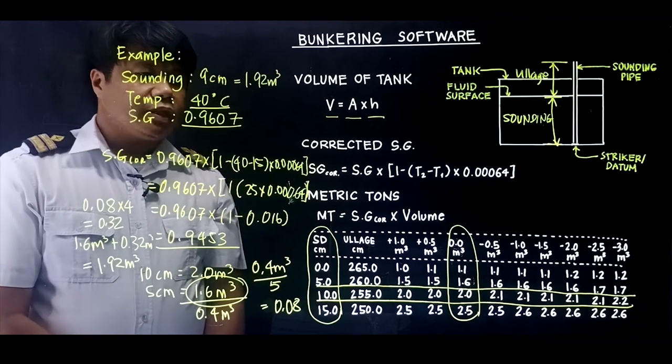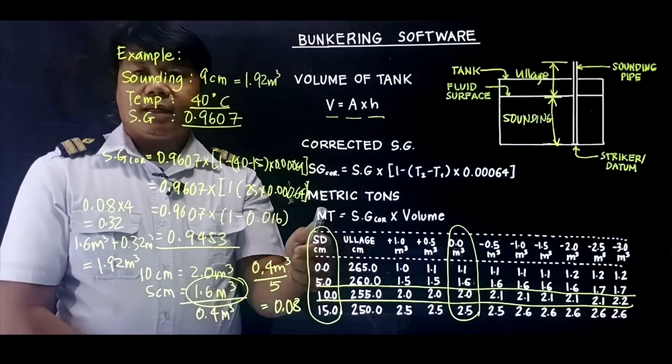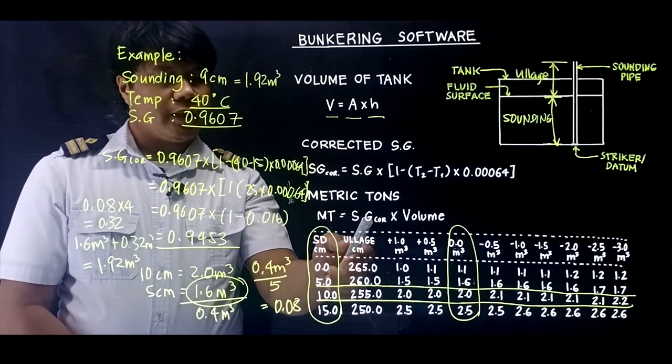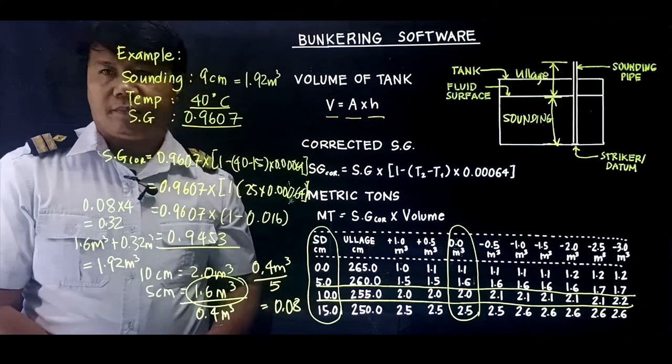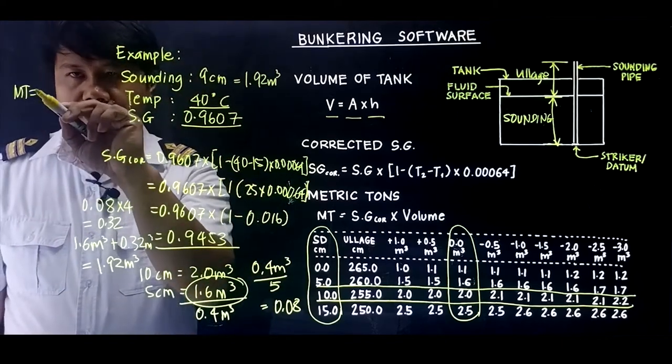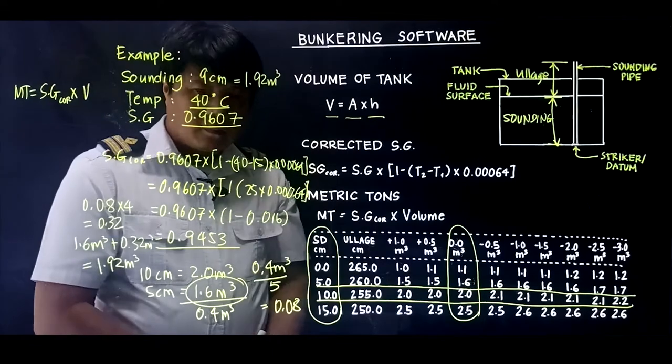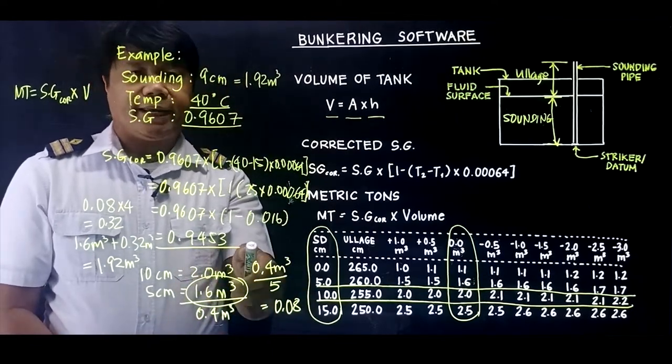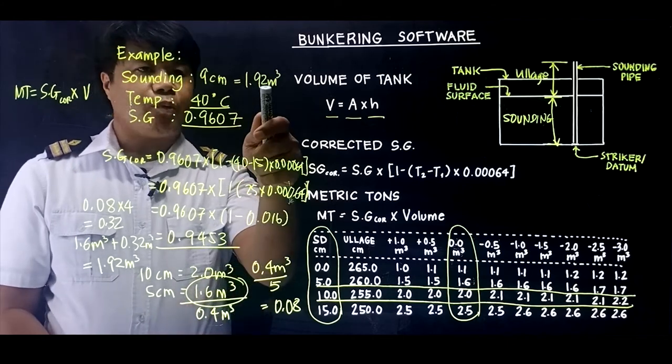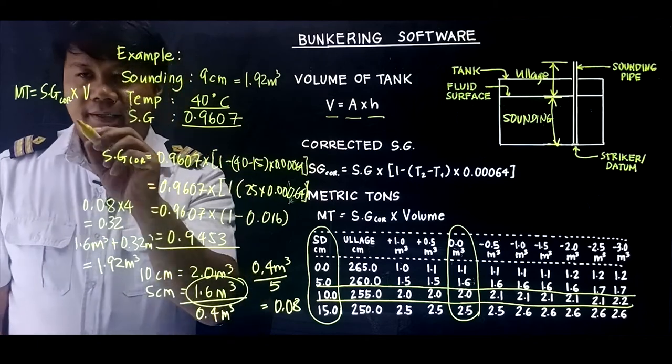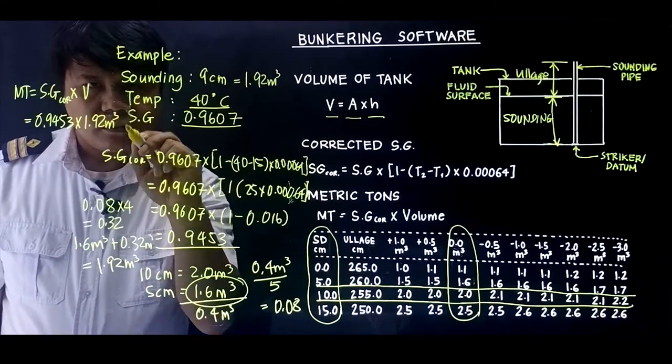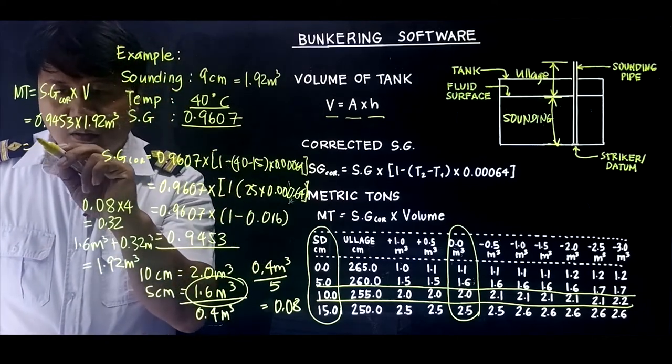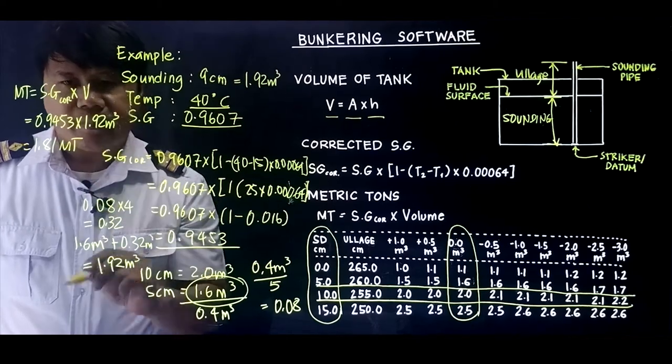So the final step is to solve for the metric tons. The formula for metric tons is metric tons equals specific gravity corrected times the volume. So our corrected SG is 0.9453 and our volume is 1.92 cubic meters. So multiplying the two will give us 1.81 metric tons.